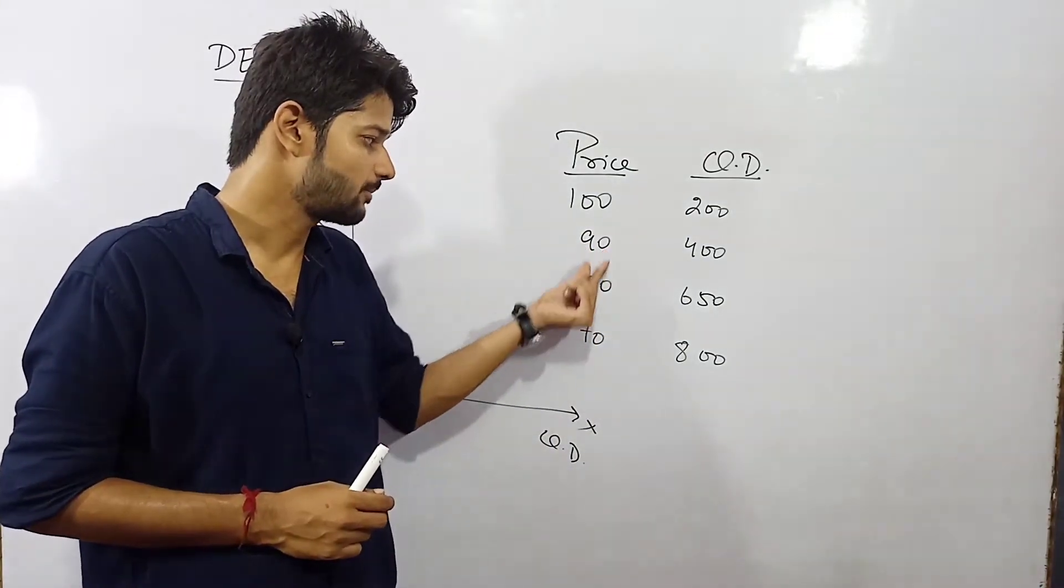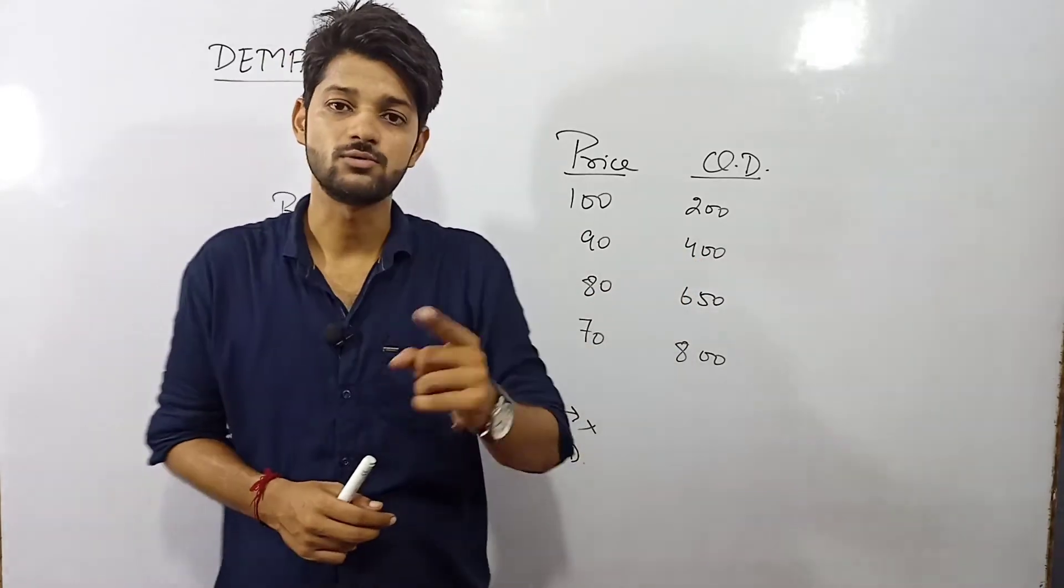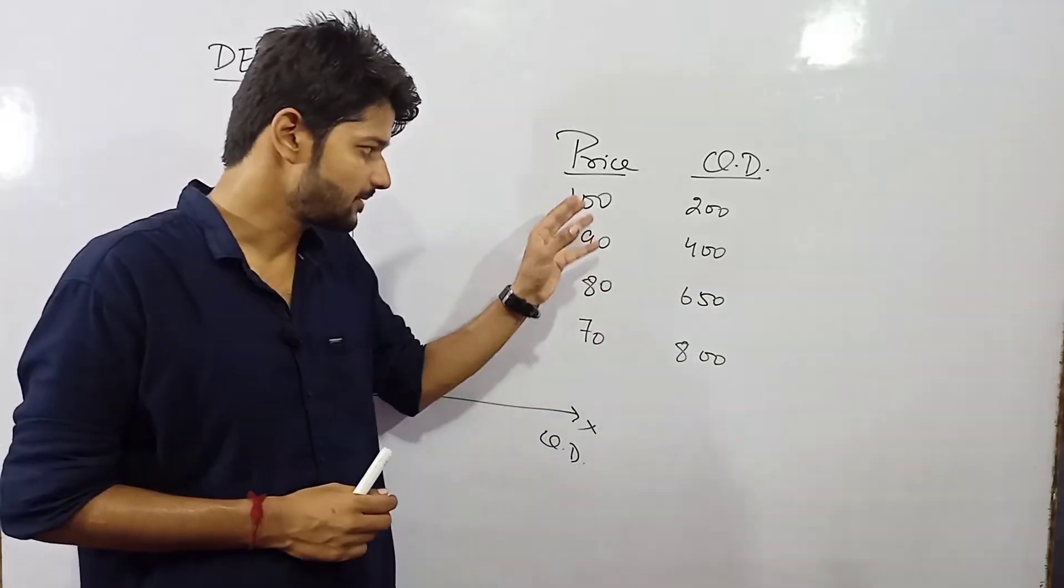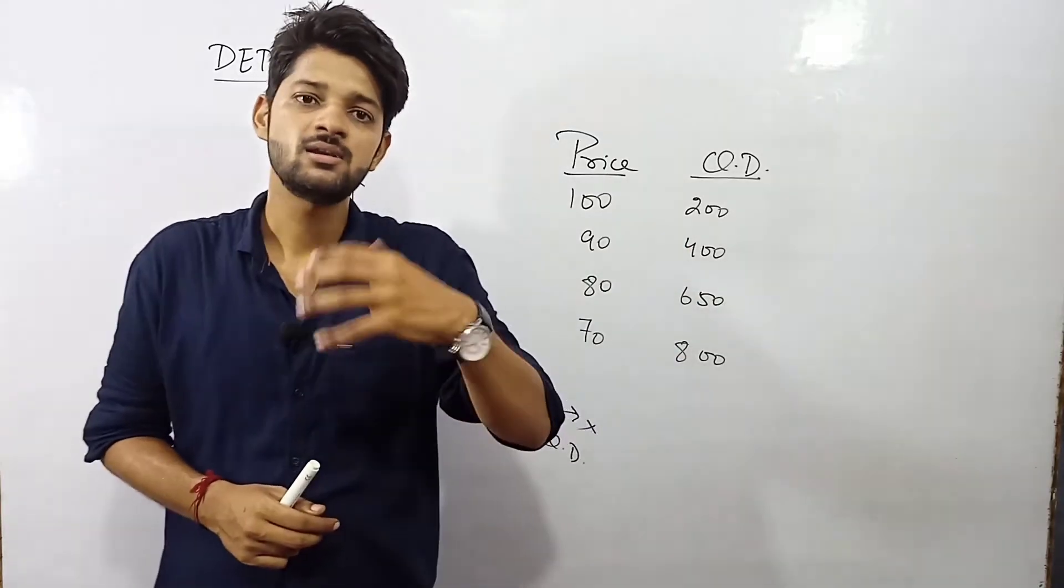Now again, as the price goes from 90 to 80, it decreases. Consumption again increases from 400 to 650. So just like the price decrease, the quantity demand is increasing.